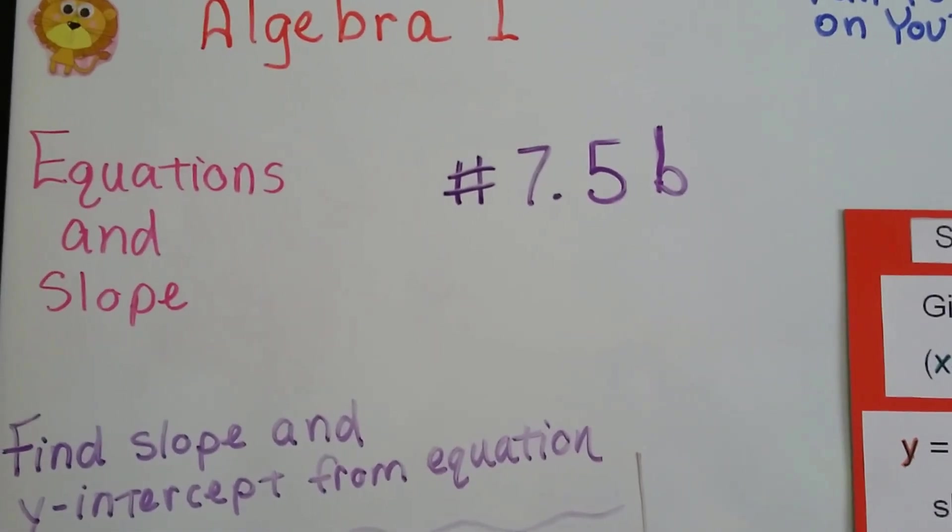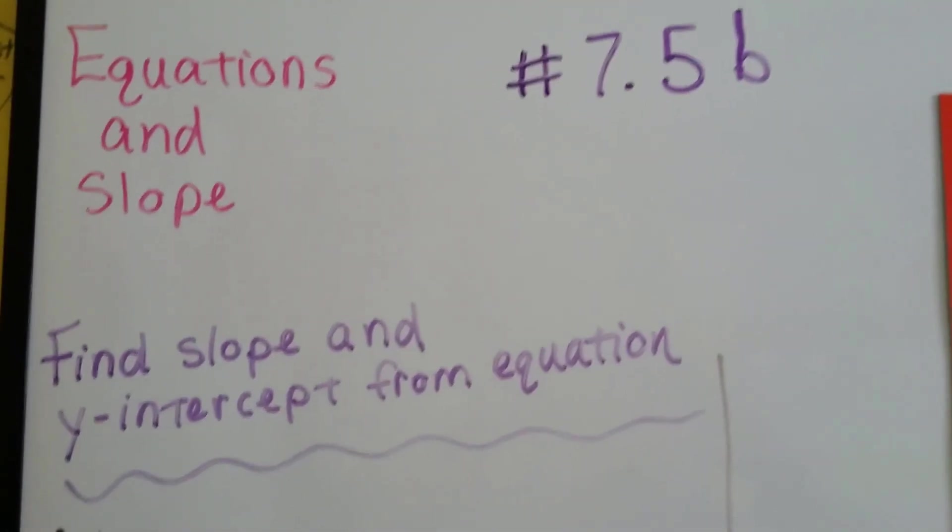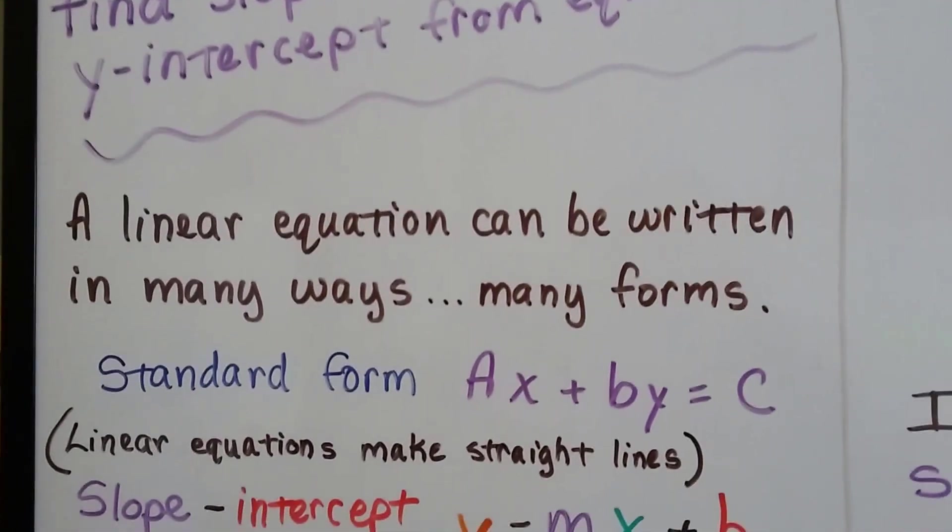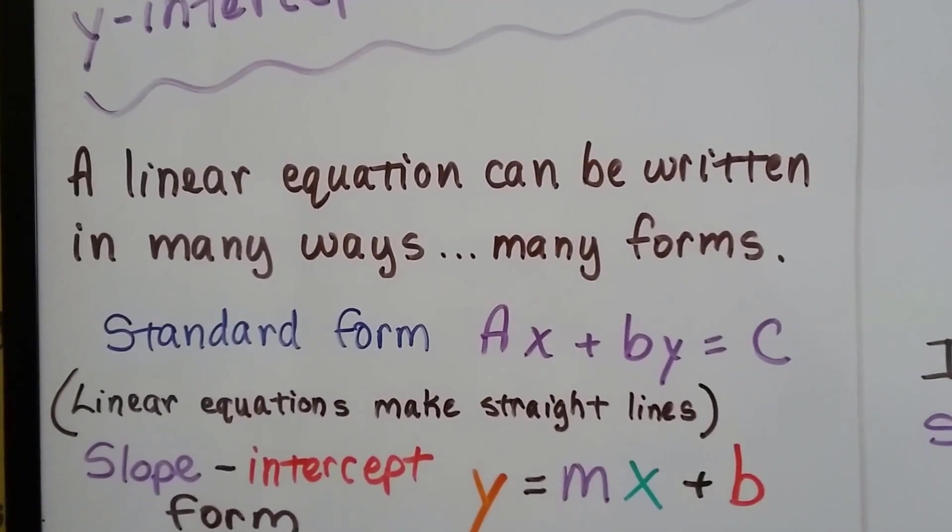Find slope and y-intercept from an equation. This is 7.5b for Algebra 1. A linear equation can be written in many ways, in many forms.